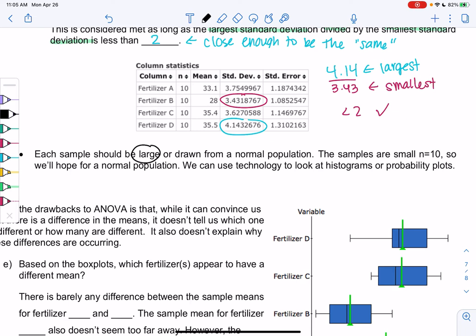And then each sample should be large, which we don't have. We only had 10 here. So we would need a normal population. So for now we'll just hope. Because we only had 10. We'll just hope for a normal population. But if we use StatCrunch we could look at those histograms or probability plots. So that last requirement is similar to what we've been doing. 10 was because each group had 10. Total is 40, but we're looking at the size of each group. When we say each sample, that's each group. So those are the requirements.